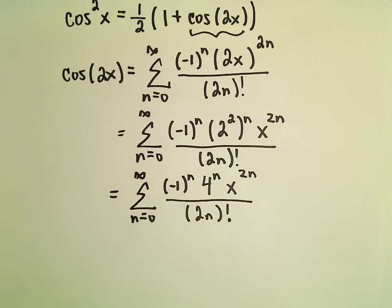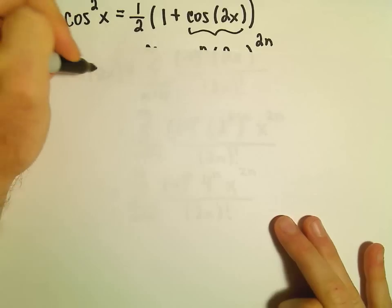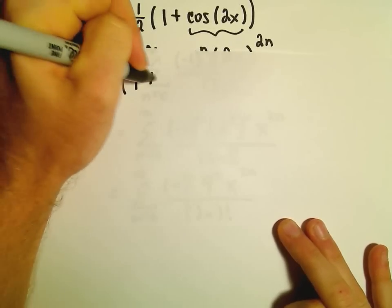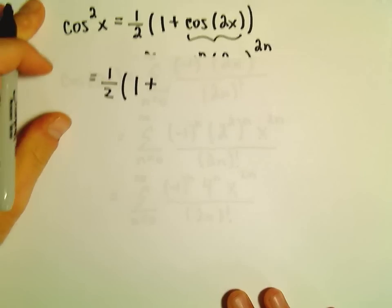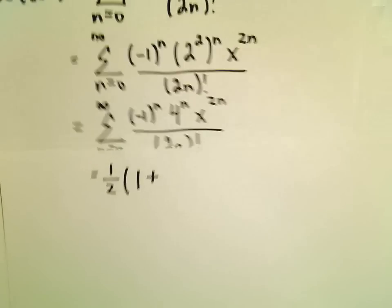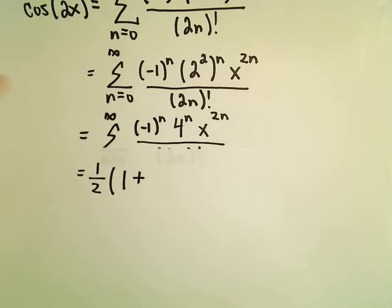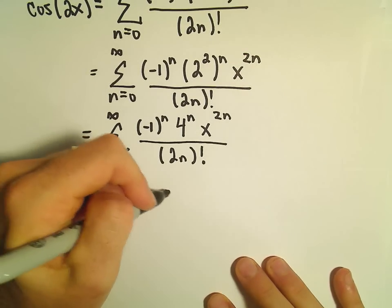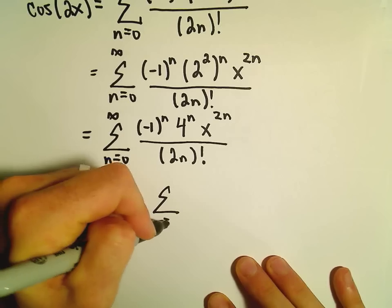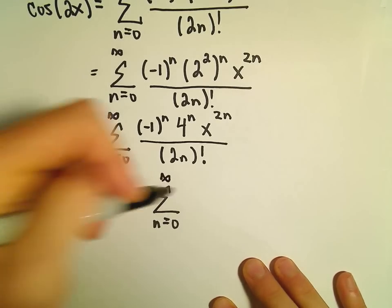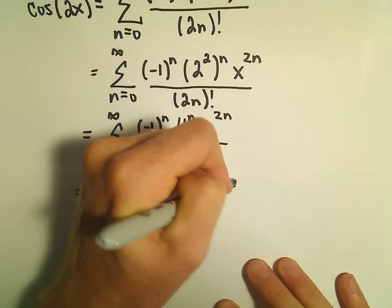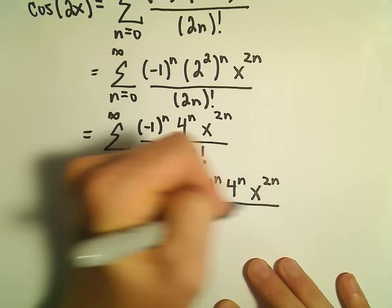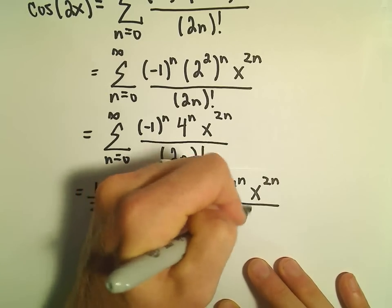Now filling in our trig identity: cosine squared x equals one half times (1 plus cosine of 2x). We've now got our series expansion for cosine of 2x, so this becomes one half times 1 plus the series from n equals 0 to infinity of negative 1 to the n times 4 to the n times x to the 2n power, all over 2n factorial.